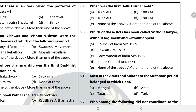Question 89: When was the first Delhi Darbar held? The answer is C — 1877 AD. It was organized three times. The first Delhi Darbar was organized in 1877 under Lord Lytton. Question 90: Which of these acts has been called 'without lawyer, without argument and without appeal'? The answer is B — Rowlatt Act, 1919.